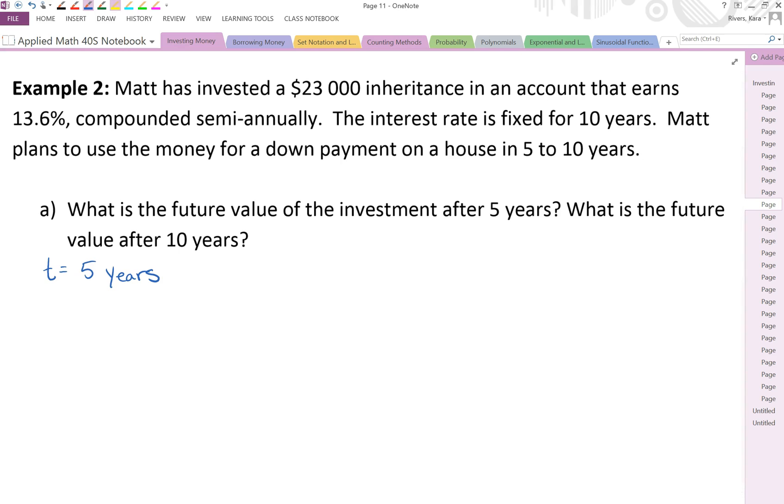So let's highlight the important information. We've got a $23,000 inheritance. That would be the principal. Earned 13.6%. So 0.136. And that would be our interest rate. Compounded semi-annually. That tells us that N is equal to 2. And the interest rate is fixed for 10 years. Fixed meaning you can't take it out until after the 10 years is over. So that would be our time. Now Matt plans to use the money for a down payment on a house in 5 to 10 years. So we'll see how much of a down payment he would have after 5 years and how much he would have on a down payment after 10 years.